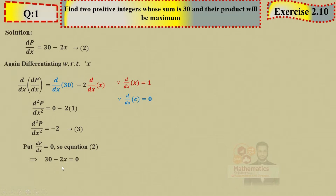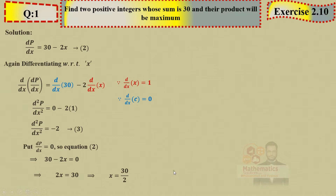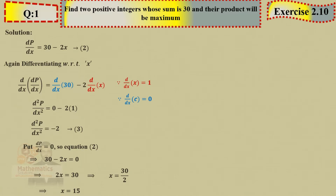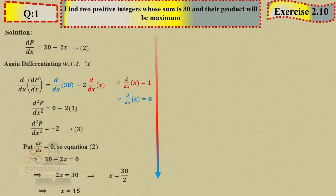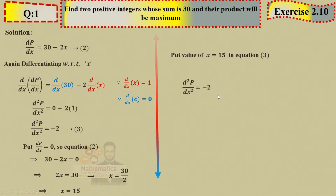From 30 − 2x = 0: 2x = 30, so x = 15. Now put this x value into the second derivative. The second derivative is −2 (no x on the right side), so it stays −2, which is less than zero. When less than zero, the function has a relative maximum.